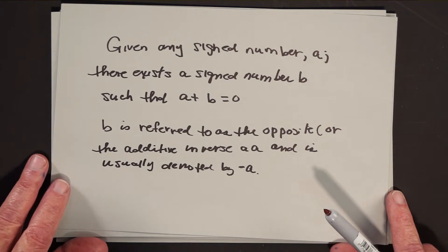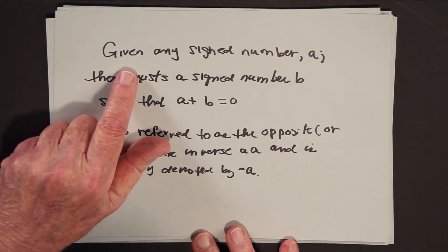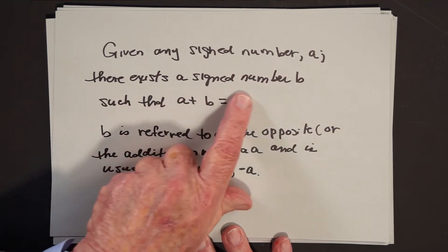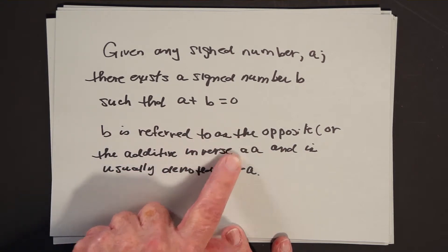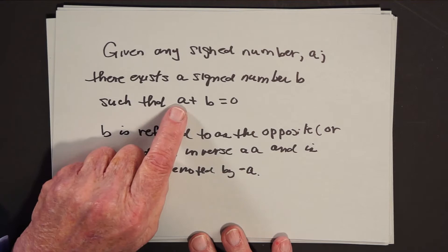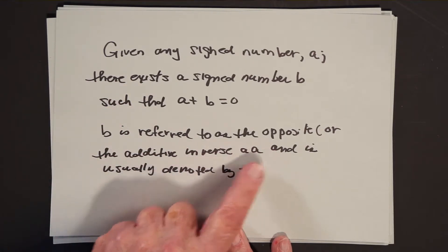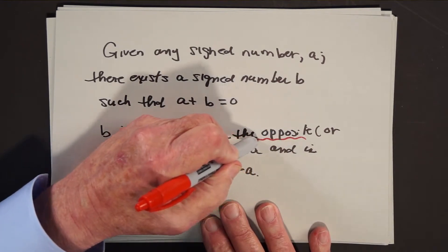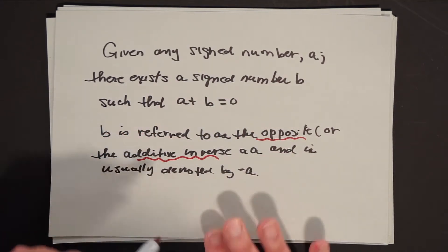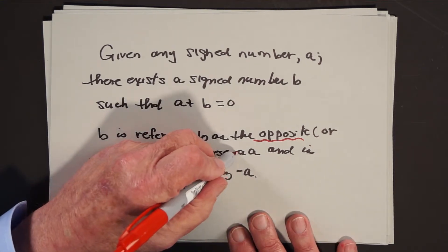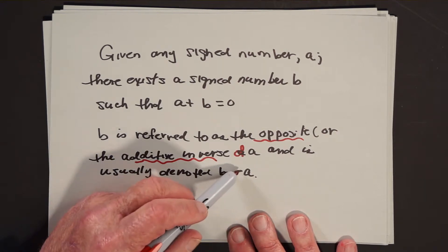In pure mathematics, we can't use the words increasing or decreasing, profit or loss. But here's the key formal statement: given any sign number A, there exists another sign number B such that A plus B is zero. All it means is, if you have a number like three, there's another number we're going to call negative three. A three-dollar profit followed by a three-dollar loss brings you back to zero. B is referred to as the opposite — the mathematical term is the additive inverse of A, usually denoted by negative A.